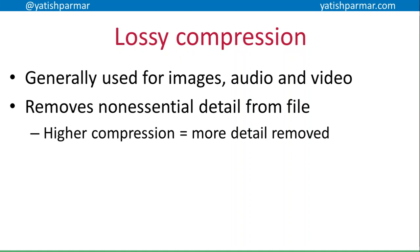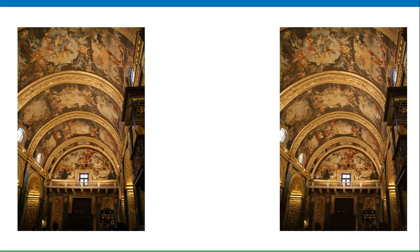Two types of compression. First, lossy compression — generally used for images, audio, and video — where we're removing the non-essential detail from the file. Examples include MP3 files, where the range of audio that we can't hear is removed.